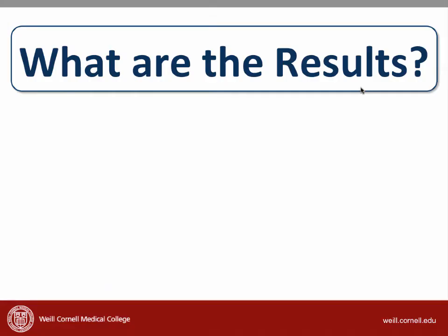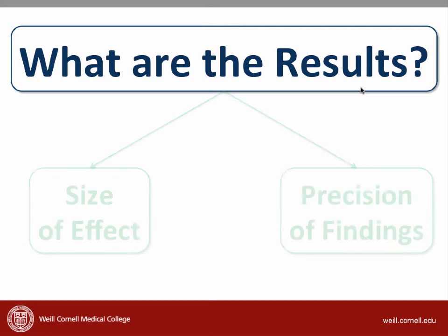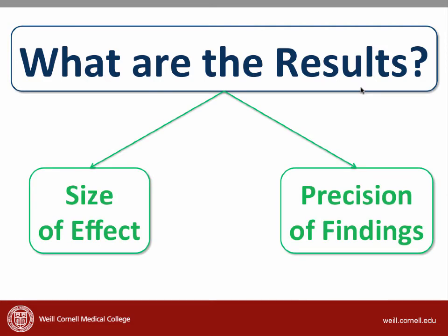The next step in critical appraisal is to interpret the results. Just as each type of study has different validity criteria, each type of study also has different ways of describing the results. The two key questions about the results are: what is the size of the effect, and how precise are the findings?